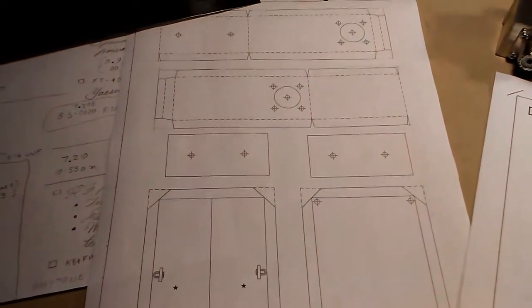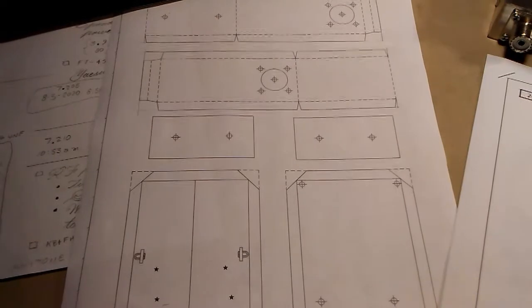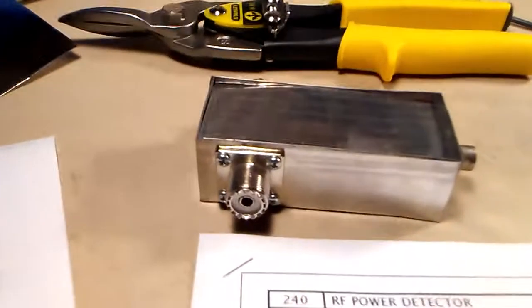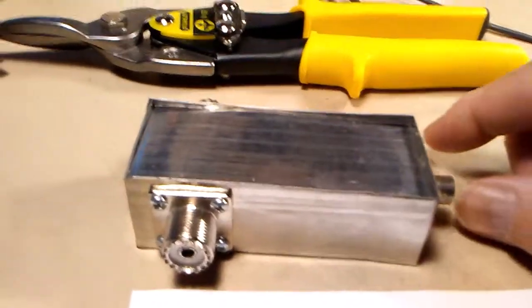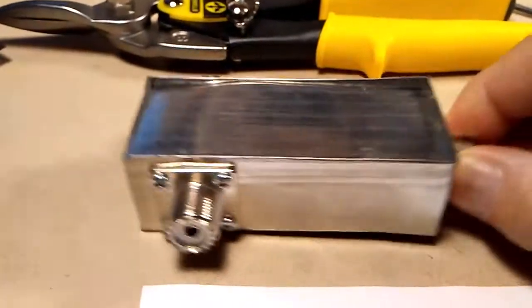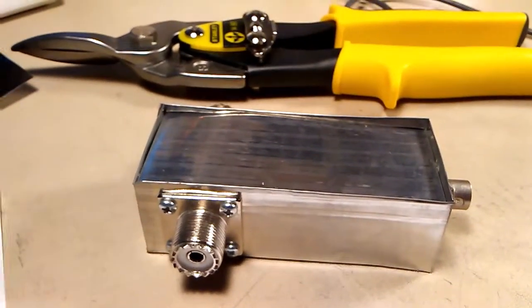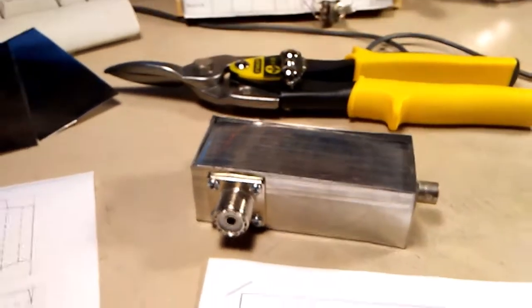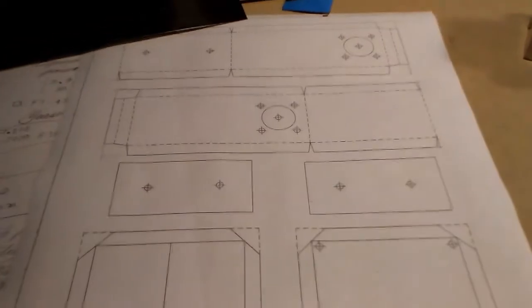I'll tape these to the steel sheet, cut it out with tin snips, and then bend it into a box very similar to my power tap here, which uses the same technique. Solder it all together. Of course, you could use circuit board material to do the same thing. I just happen to like working better with the tin plated steel sheet, and I'll have a link where you can get the sheet if you're interested.